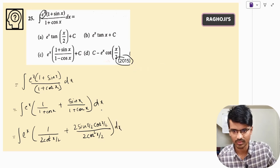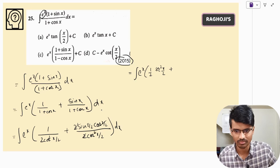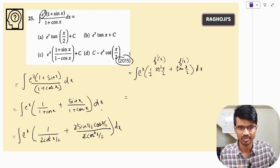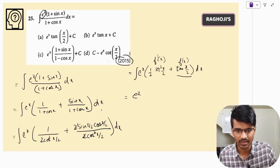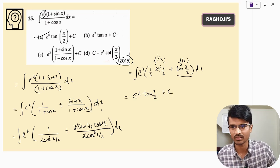After substitution, 1/(1 + cos x) becomes 1/(2cos²(x/2)), which is (1/2)sec²(x/2). The sin x/(1 + cos x) term simplifies: the 2's cancel and cos cancels, leaving tan(x/2). So we have e^x times [(1/2)sec²(x/2) + tan(x/2)] dx.